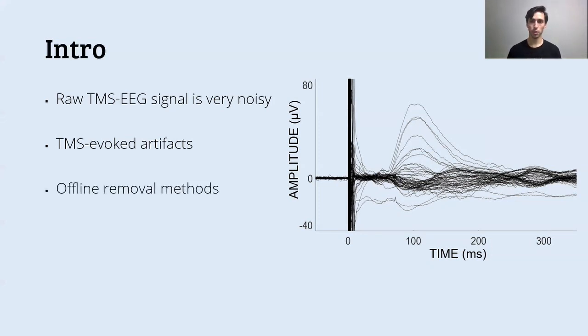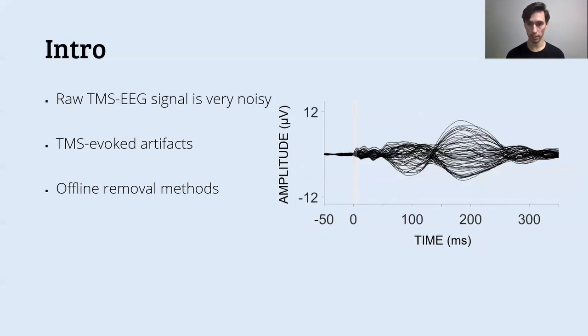For this reason, there were developed a lot of offline removal methods to extract from this raw TMS EEG signal the useful TEPs that, in the end, look like this nice signal here, which is very different from what we saw before. So this is an important and heavy phase of TMS-evoked signal processing. The point is that there are several methods to do this, but there is no standard method.